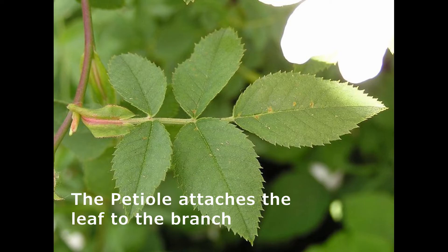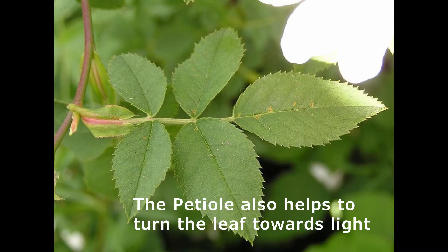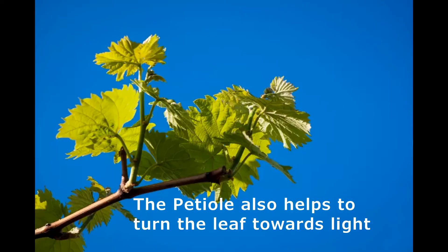The petiole also turns. Petiole helps the leaf to turn to the light. Remember how much the leaf needs light. So apart from helping the leaf to get attached to the branch, the petiole also helps to turn the leaf towards the light that it very much needs to make the plant food.